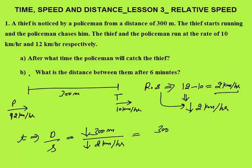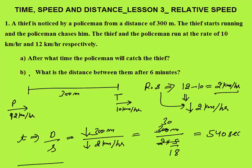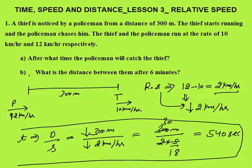You need to convert km per hour to meter per second: 2 × 5/18 = 5/9 meters per second. Time = 300 ÷ (5/9) = 540 seconds. The policeman will catch the thief. You only need to apply this formula in the exam and you will be able to solve your question.